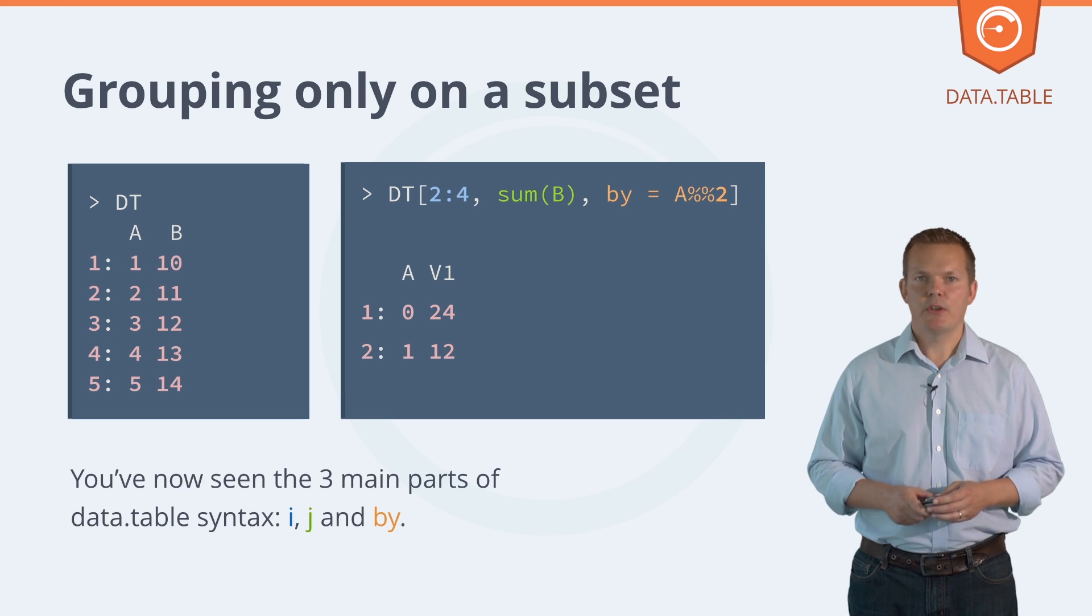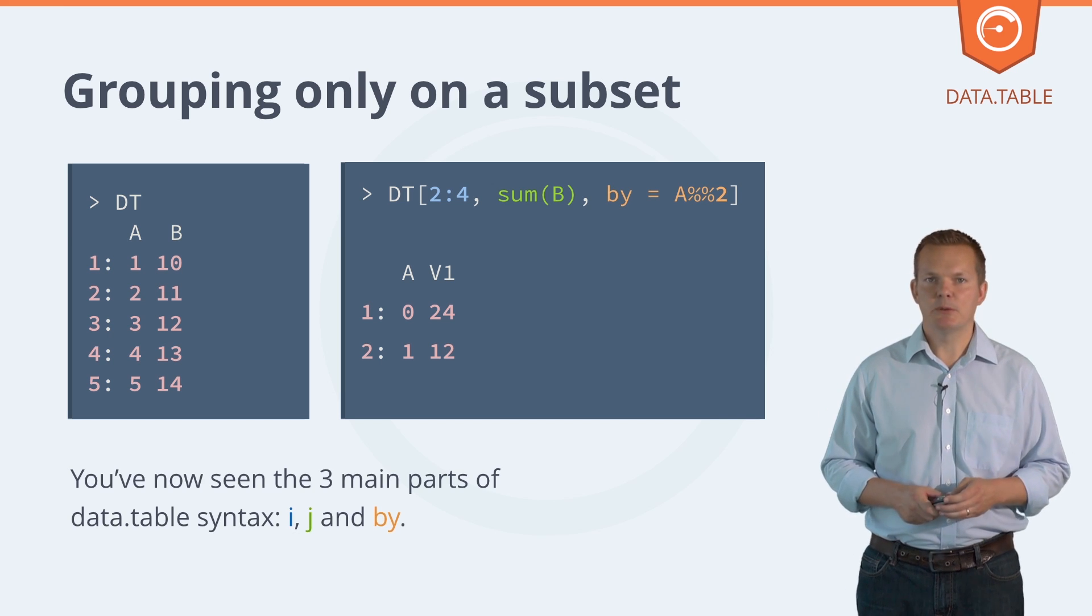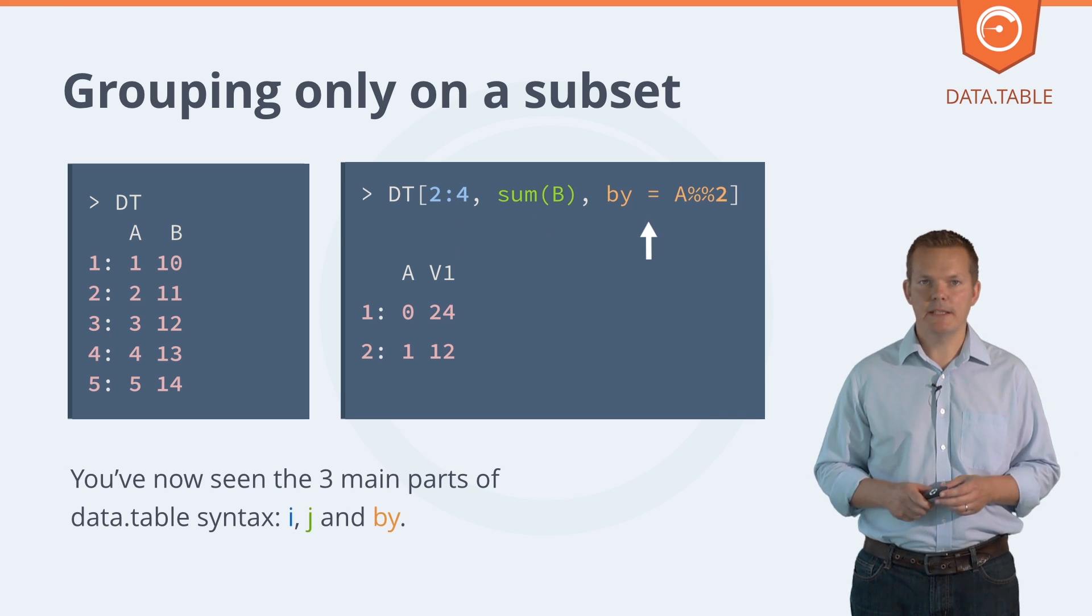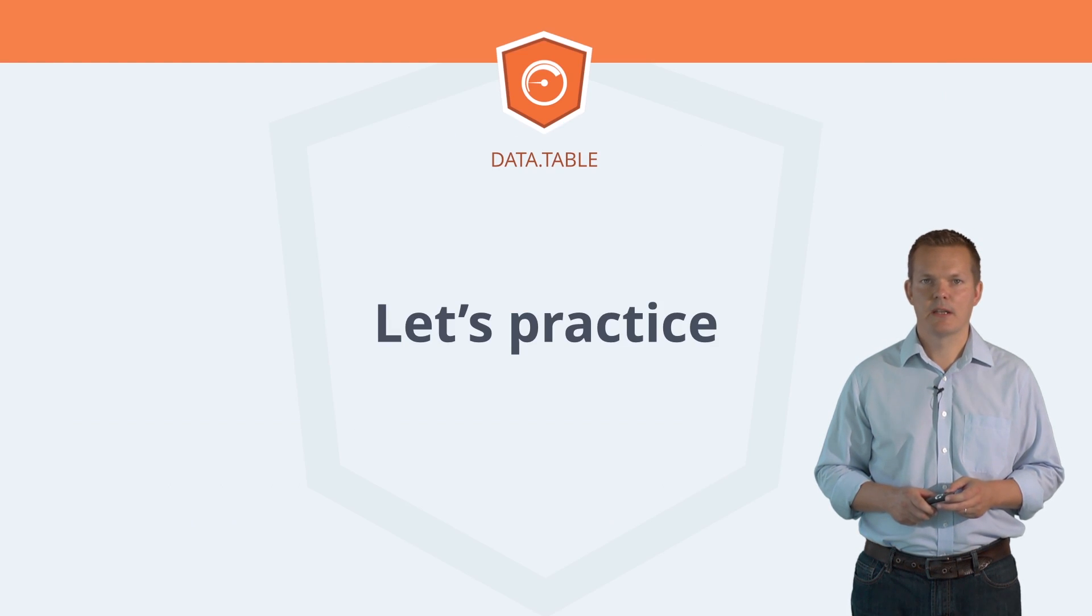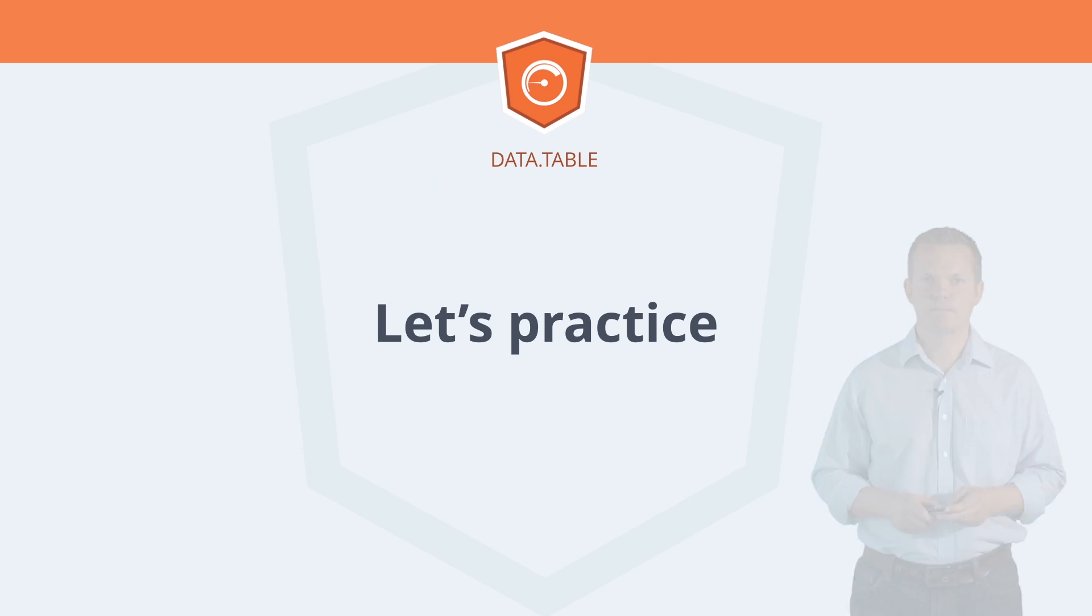That's pretty much it. Those are the three main arguments of data table: i, j and by, and the rest of the course really just expands on this theme. Now for some exercises to put these three arguments into practice.